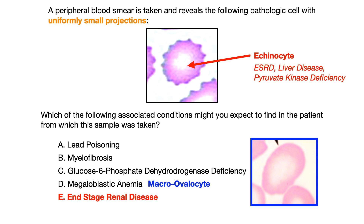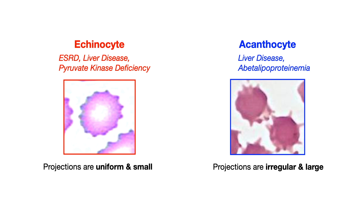Before concluding, since we're talking about pathologic red blood cells, I want to point out a high-yield distinction between echinocytes and acanthocytes, because people often confuse the two. Echinocytes, as given in this vignette, are associated with end-stage renal disease, different states of liver disease, and pyruvate kinase deficiency. The key feature of an echinocyte is those uniform small projections.